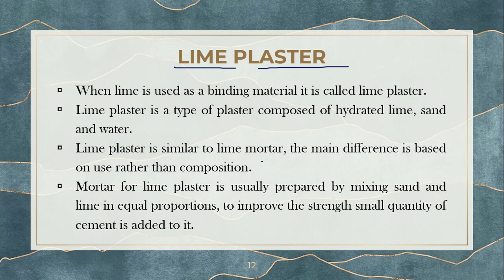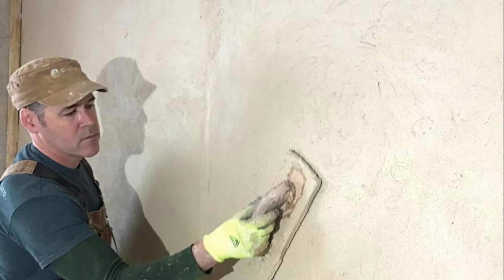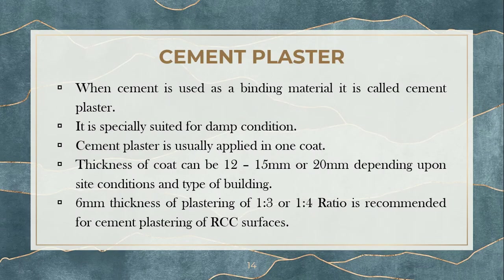Lime plaster is very similar to lime mortar, but the composition of lime mortar and lime plaster are a little bit different. For mortar we use a 1:2:3 combination, but for plasters we vary the composition based on the type of plastering we are doing. The mortar for lime plaster is usually prepared by mixing sand and lime in equal proportions. To improve the strength, a small quantity of cement is also added to it. This is lime plaster, which looks very white in color.